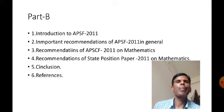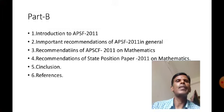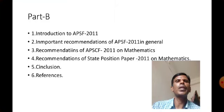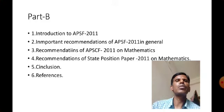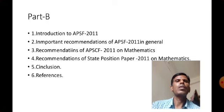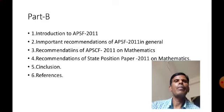So just as we wrote Part A, we write Part B in the same structure — the only difference is that instead of NCF 2005, we are writing about APSFC 2011. Part B should also be covered in two to three papers, that is four to six pages. Together, the first topic should be completed in not less than eight and a maximum of twelve pages.